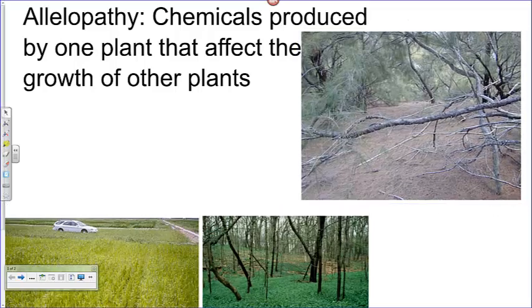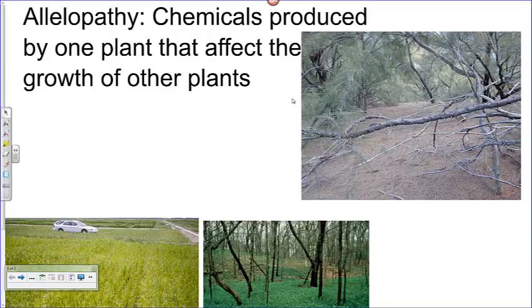Here's a plant that's called tamarisk or saltcedar. You find it out west a lot. It's a pretty invasive species. It's hard on the environment, and it's because of allelopathy.